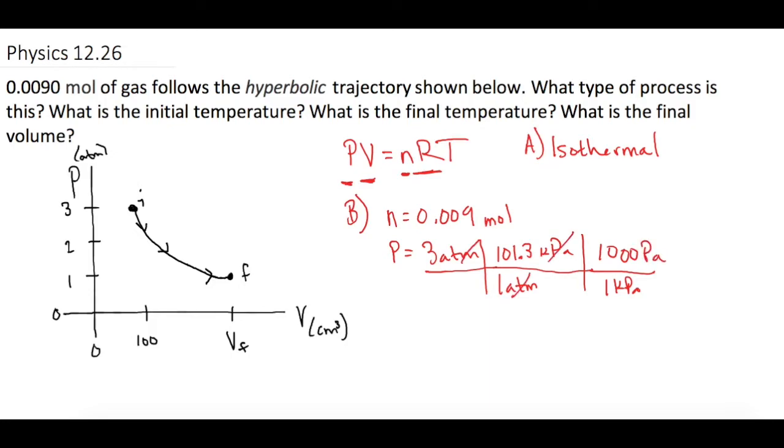Atmospheres cancel, kilopascals cancel, left with pascals. So that is going to be 303,900 pascals is our initial pressure. Now we need to know the initial volume which is 100 cubic centimeters. Moving the decimal place over 6 gives us 0.0001 cubic meters and then R of course is 8.314. So now let's go ahead and solve for temperature.